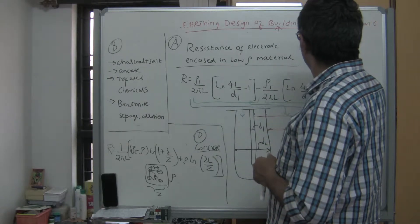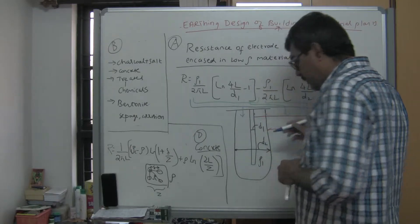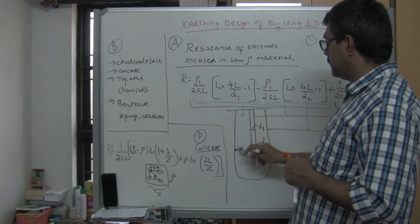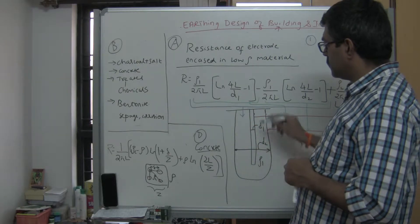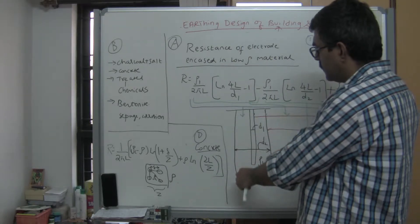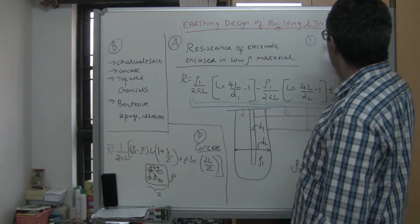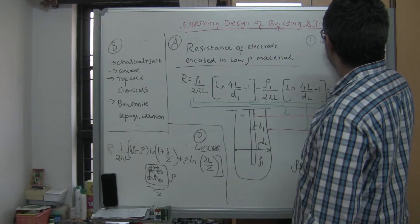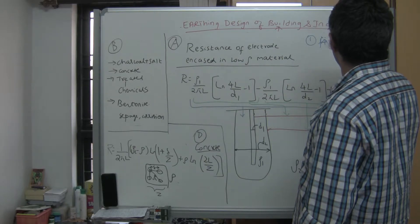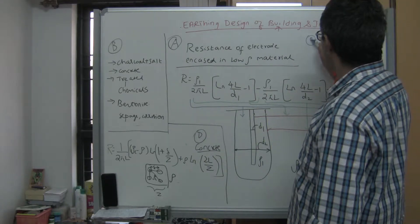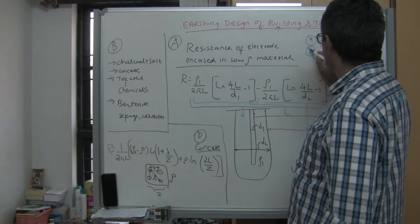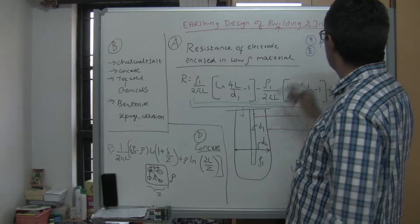One option is to use low resistivity material around the electrode. You have the electrode, and for some distance around it, fill a low resistivity material. That is option A - fill low resistivity material. Then we have option B and other options.